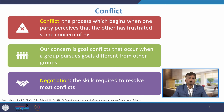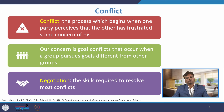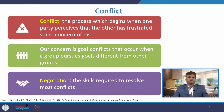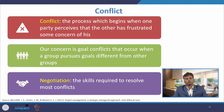First, let me define what conflict is. Conflict is the process which begins when one party perceives that another has frustrated some concerns of his. Our concern is goal conflict, which occurs when a group perceives goals differently from other groups. The two groups have a common goal but perceive it from different perspectives, and that leads to conflict. To resolve that conflict, we need the skill called negotiation.